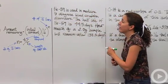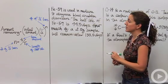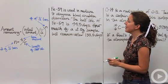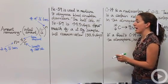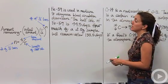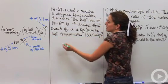Alright, so let's say we have iron-59, a radioactive isotope of iron, is used in medicine to diagnose blood circulation disorders. The half-life of iron-59 is 44.5 days. How much of a two gram sample will remain after 133.5 days? Okay, so let's actually look at our formula and plug everything in. So the amount remaining is what we're looking for. So that's x.